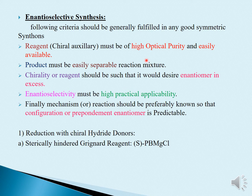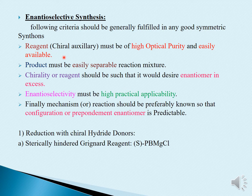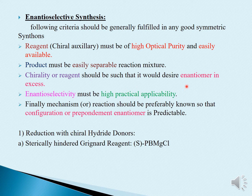In enantioselective synthesis, there are some criteria to fulfill. It should have good symmetric synthons — the reagent or the chiral auxiliary must be of high optical purity and should be easily available. The product must be easily separable from the reaction mixture, and the chirality of the reagent should be directed toward the desired enantiomeric axis, which plays a major important role.